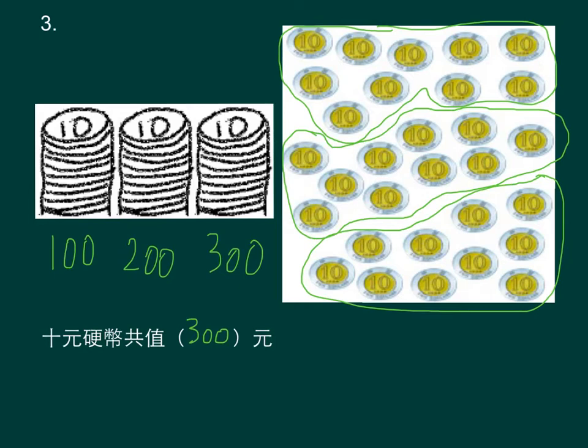总结方法：第一，将每一种硬币每约若干个搭成一搭；第二，每一搭的币值要是容易数数的，例如五元、十元、五十元、一百元；第三，然后用数数的方法找出总值。由于同一币值硬币的厚度相同，在搭硬币时只需小心数出第一搭的数量，往后的硬币只需搭成和第一搭差不多高就可以了。